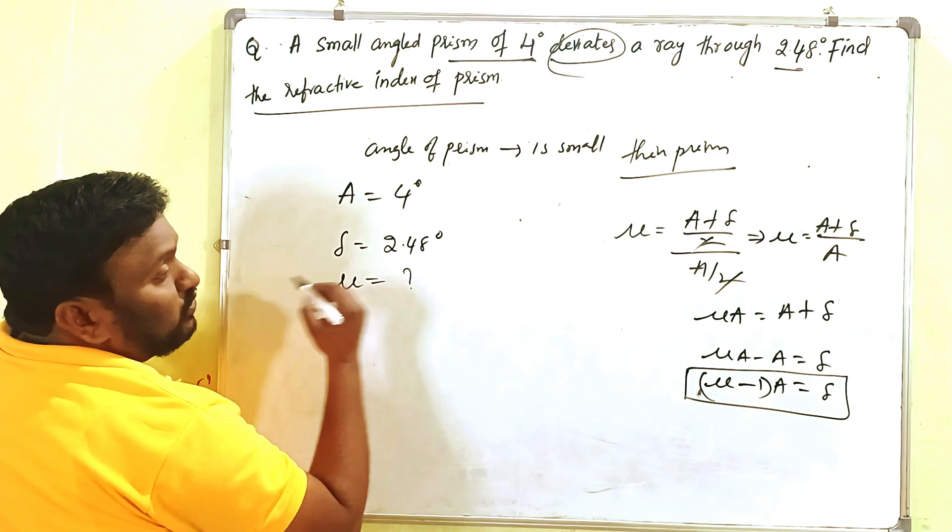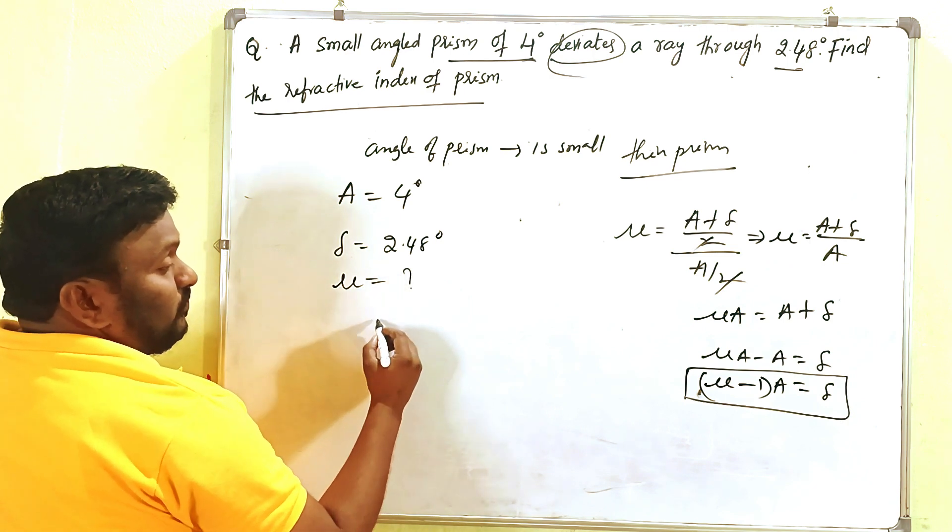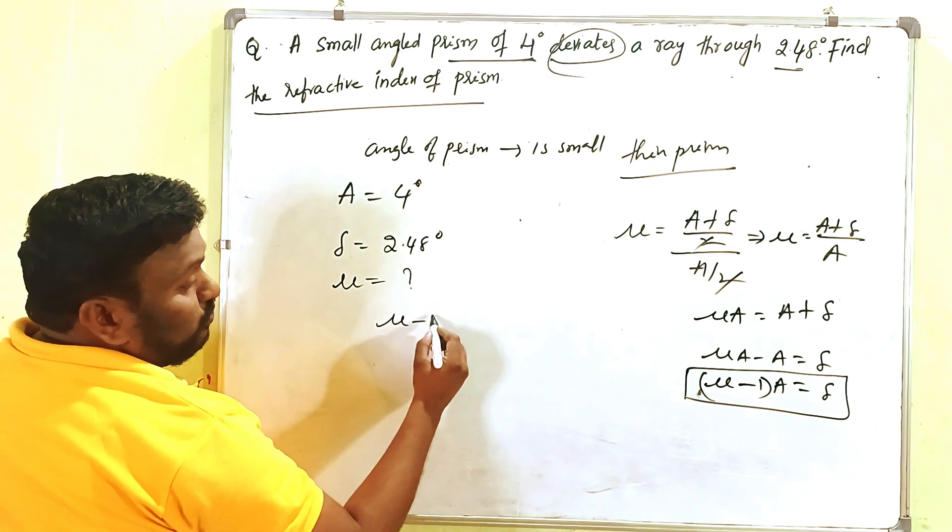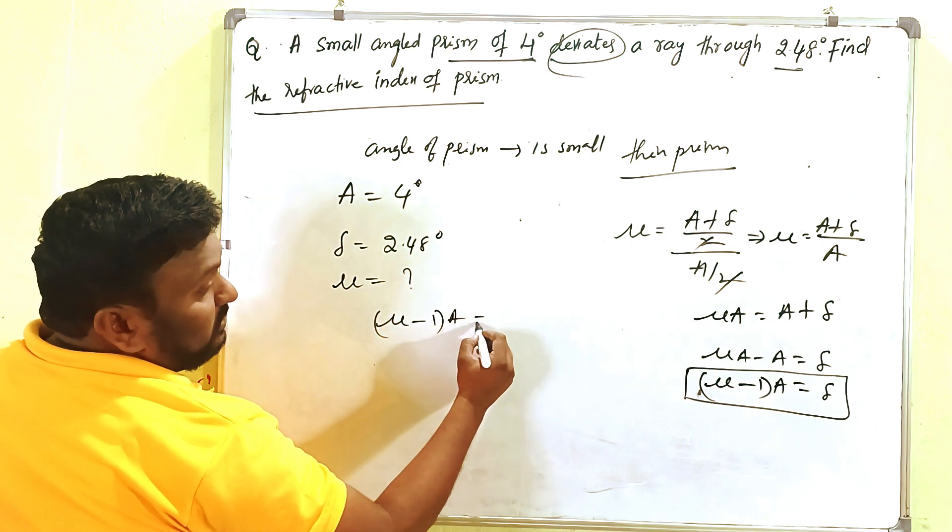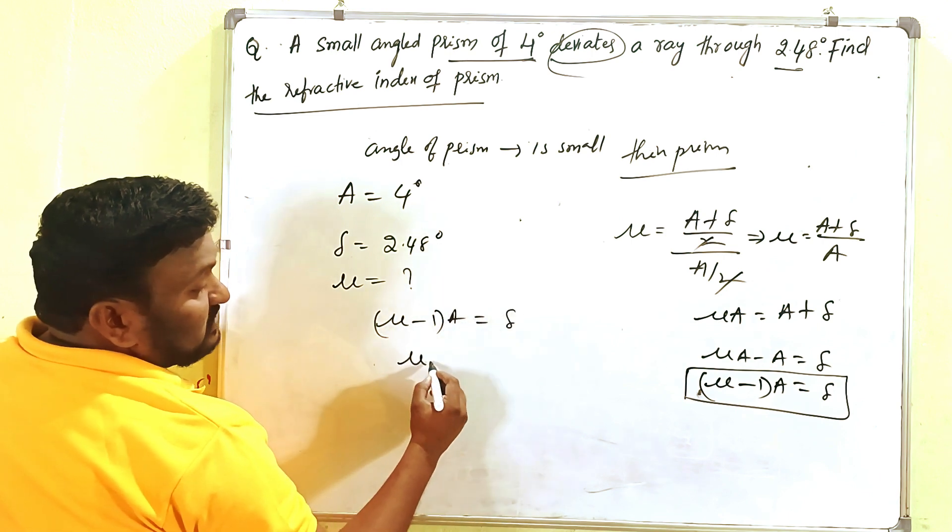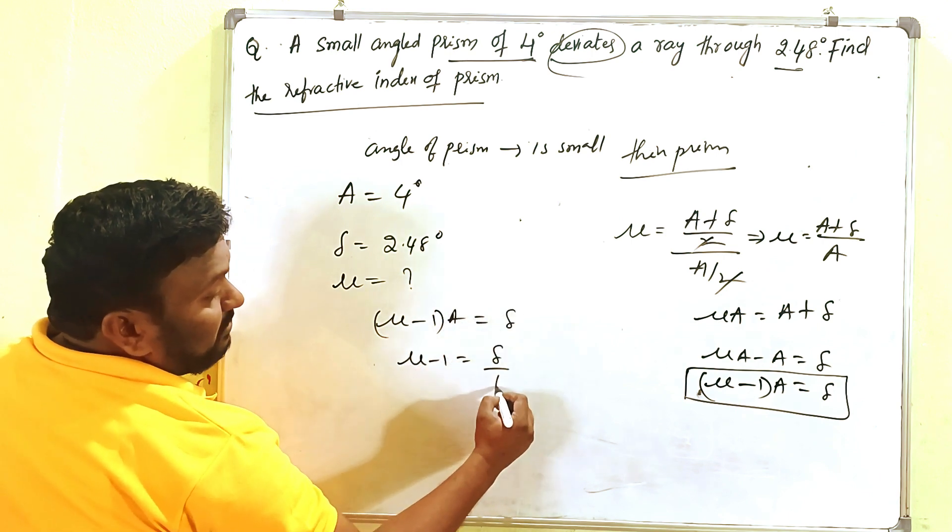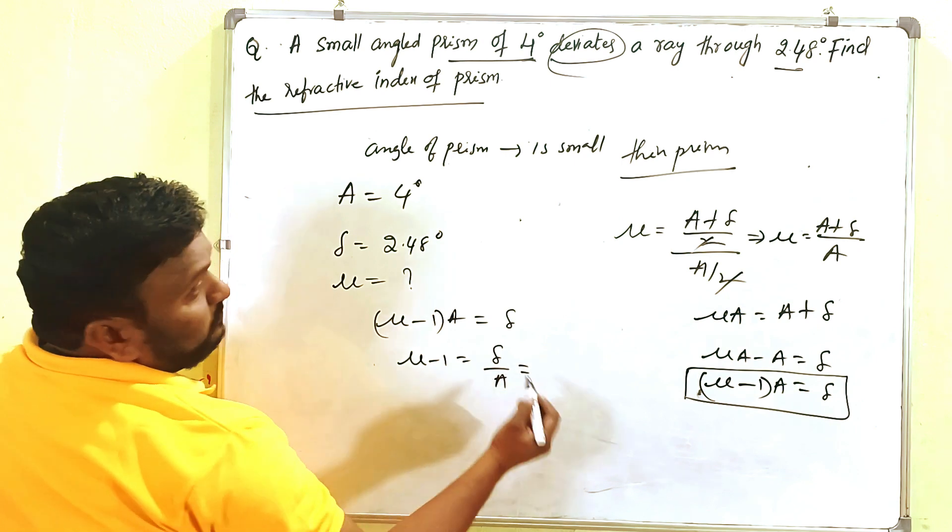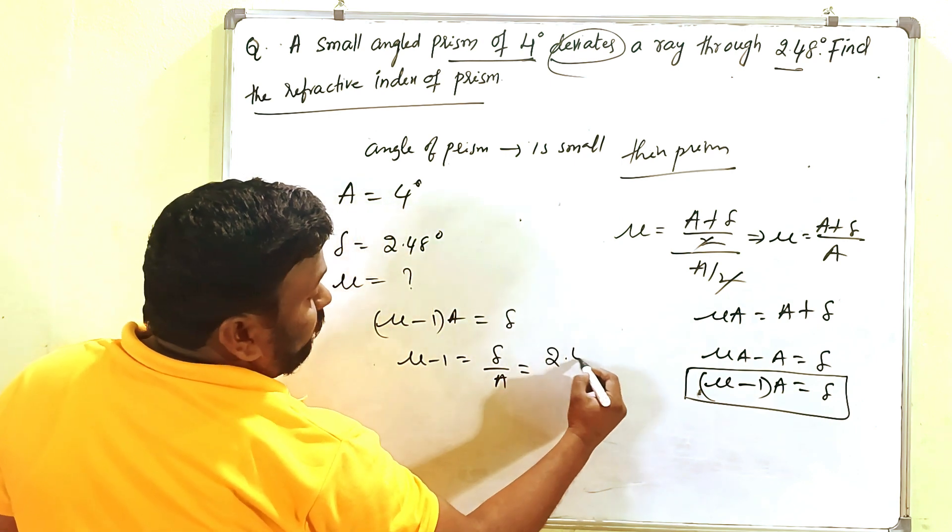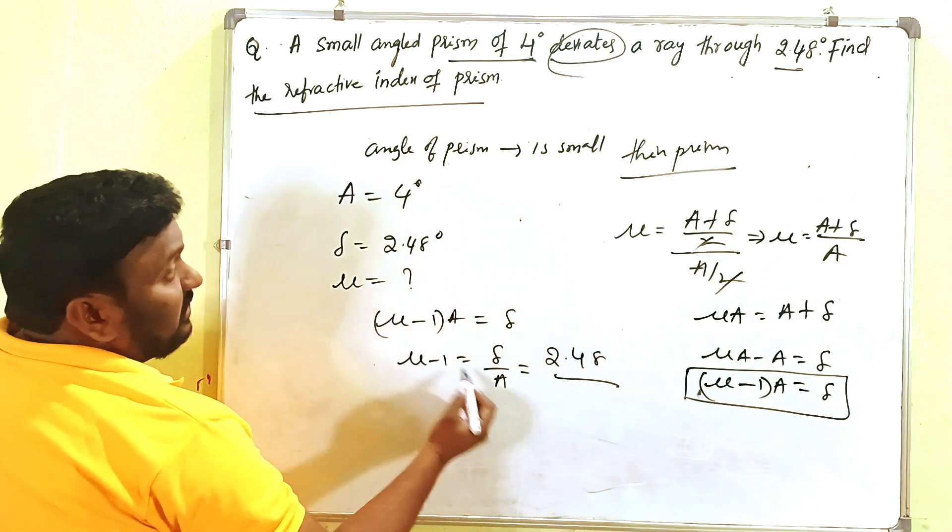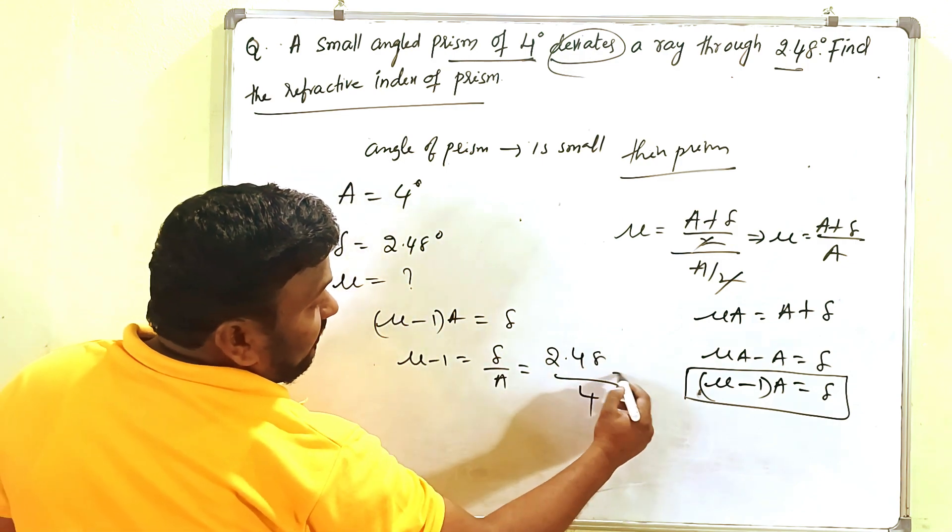Then (mu minus 1) into A equals delta. So mu minus 1 equals delta by A. What is delta? 2.48. And A value is 4. Then what do you get?